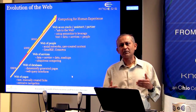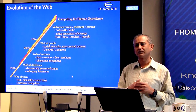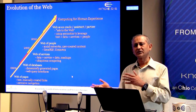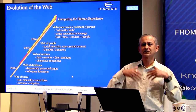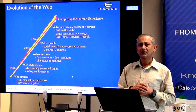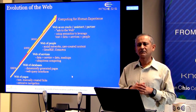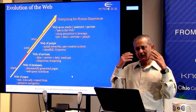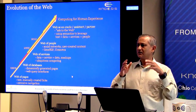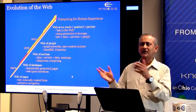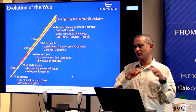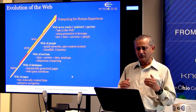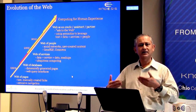Then we started to have a web of databases. We figured out that we can put a program on a server that can launch queries against a database, get the results, and then create HTML on the fly — dynamic HTML — so you can see query results on the fly. You could show a table that came from a database; rows and columns came from the database and you could display that on the web. So pages could be dynamically generated, driven by databases.